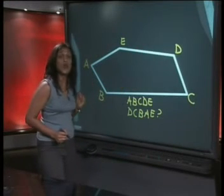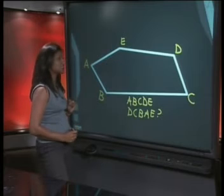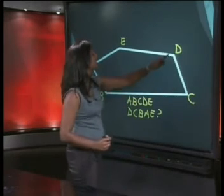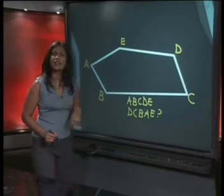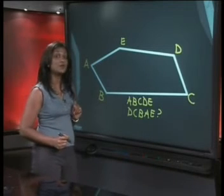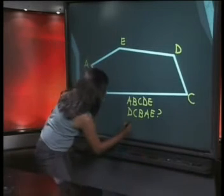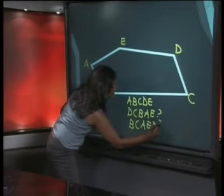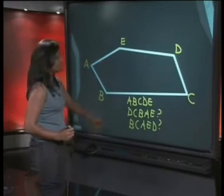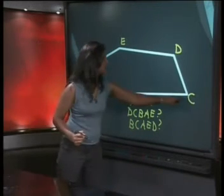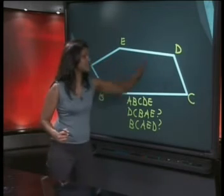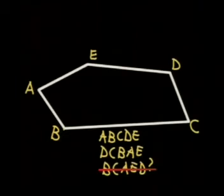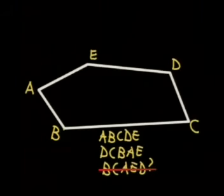Now in this polygon, we can also call A and B consecutive vertices. So are B and C, as well as D and E. Now can you label the polygon B, C, A, E, D? Let's have a look — B, C, A, E, D. This does not work as C and A are not consecutive vertices.